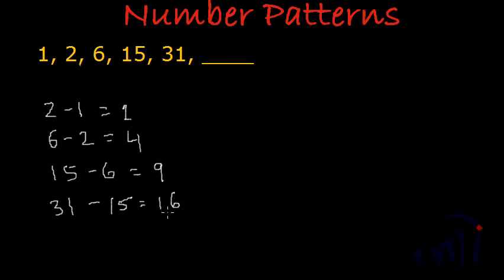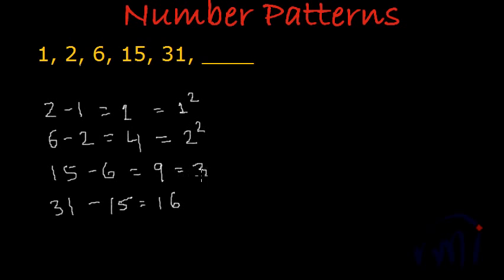Now you have found the logic. This 1 is actually equal to 1 square, and this 4 is actually equal to 2 square. Then we have 9 which is 3 square and then we have 16 which is 4 square.